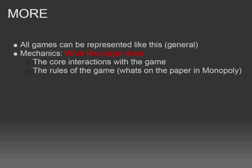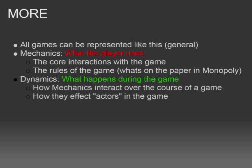Mechanics are what the player does — the lowest-level interactions that the player has with the system. Things like rolling a dice or drawing a card. Then we have dynamics: that's what happens during the game, the result of mechanics. For example, in poker you bluff — that's a dynamic. It happens but there's no rule saying you can bluff. It happens as a result of the mechanics of the game.